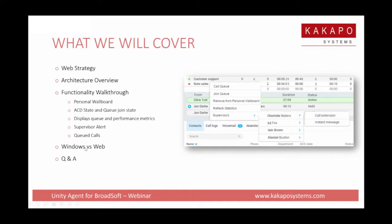We're going to wrap up to make sure there's no ambiguity about what we've got in the Windows product versus the web product, which also touches on a roadmap discussion — we'll show what's coming. Then we'll wrap up with a Q&A. If you want to use the toolbar on the right-hand side of the screen, you can ask a question and we'll come to those at the end.